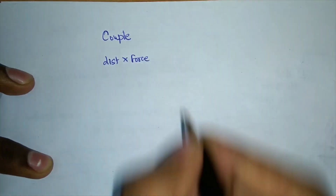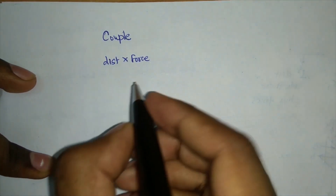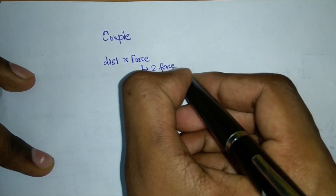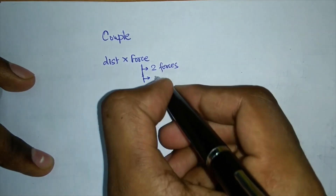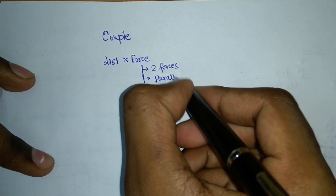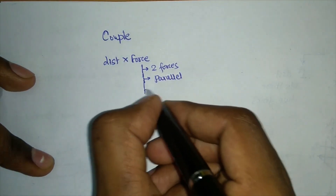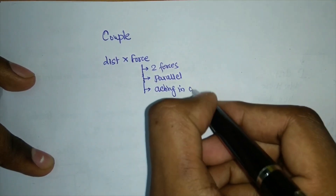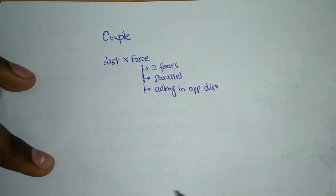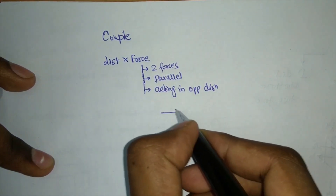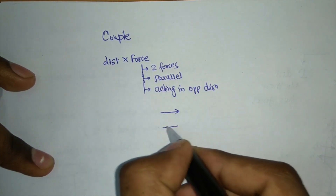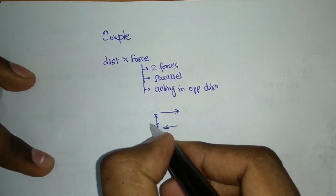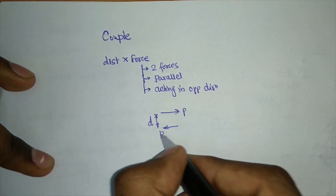As the name suggests, a couple involves two forces. The conditions are: two forces must be present, they must be parallel to each other — this is a must condition — and they must act in opposite directions. If one force acts upward and another acts downward, and they are parallel with a distance D between them, they form a couple.